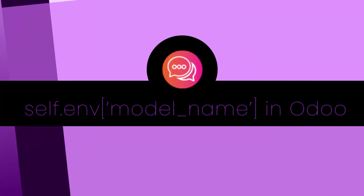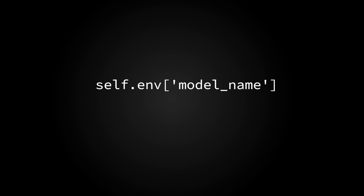Understanding self.env in Odoo. The env attribute is a critical part of the Odoo framework, providing access to the current environment, the user's context, the cursor, and the current model instances. Self refers to the current record or record set. In Odoo, methods on models are executed on record sets, which are collections of records. A method can be executed on a single record or multiple records at once, and self will always refer to the record or records the method is being executed on. Env holds information including the cursor for database access, the current user, and the current context. Model name is a string specifying the name of the model you want to access — for example, res.partner for the partner model or hr.employee for the employee model.